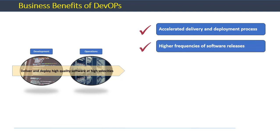The next benefit is higher frequencies of software releases. DevOps practices such as continuous integration and continuous delivery, along with automation of the pipelines from software development to deployment, enable organizations to release software constantly to production or at a minimum get it ready for deployment. Many organizations have reported that their releases have gone up by 50 to 100 times. For example, Netflix reported doing thousands of releases on a daily basis — an astounding increase from earlier practices which allowed for a much fewer number of releases per week.